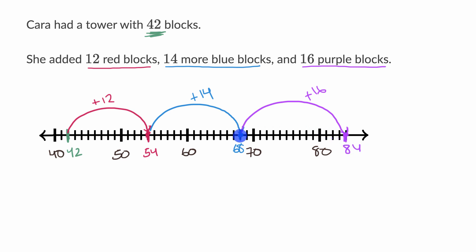Another way you could have thought about it is it would have taken us two blocks to go to 70, then we would have 14 left, another 10 to get to 80, and then we would have four left and then you get to 84. But now Kara has a total of 84 blocks.